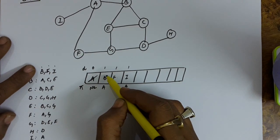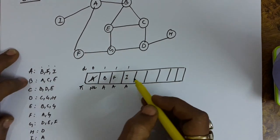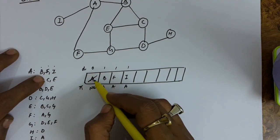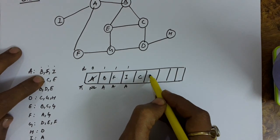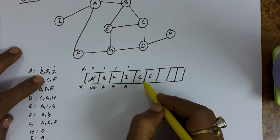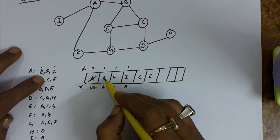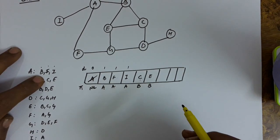Now see the connections from B. These are A, C and E. A already deleted from the queue. C we can insert, E we can insert. So C and E have got explored from B so the predecessor of these two vertices will be B.